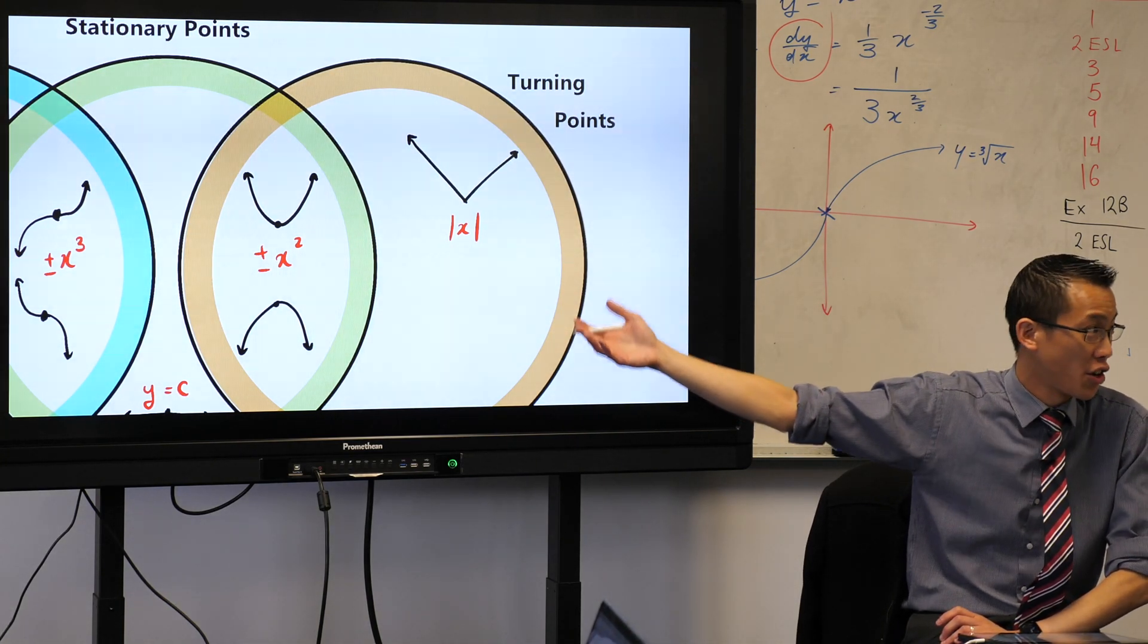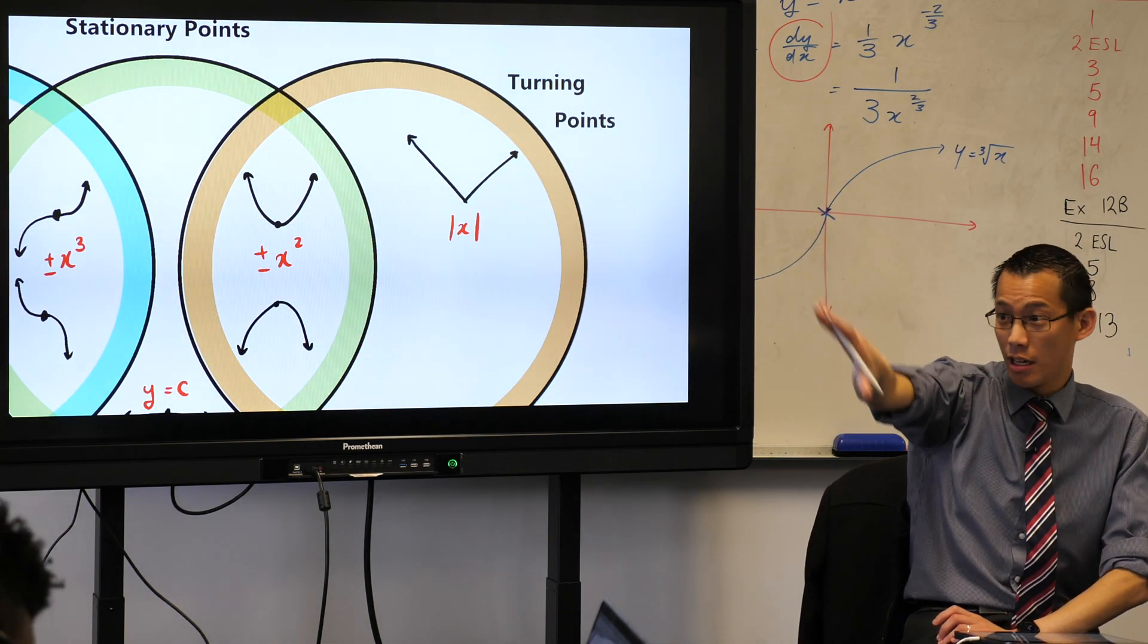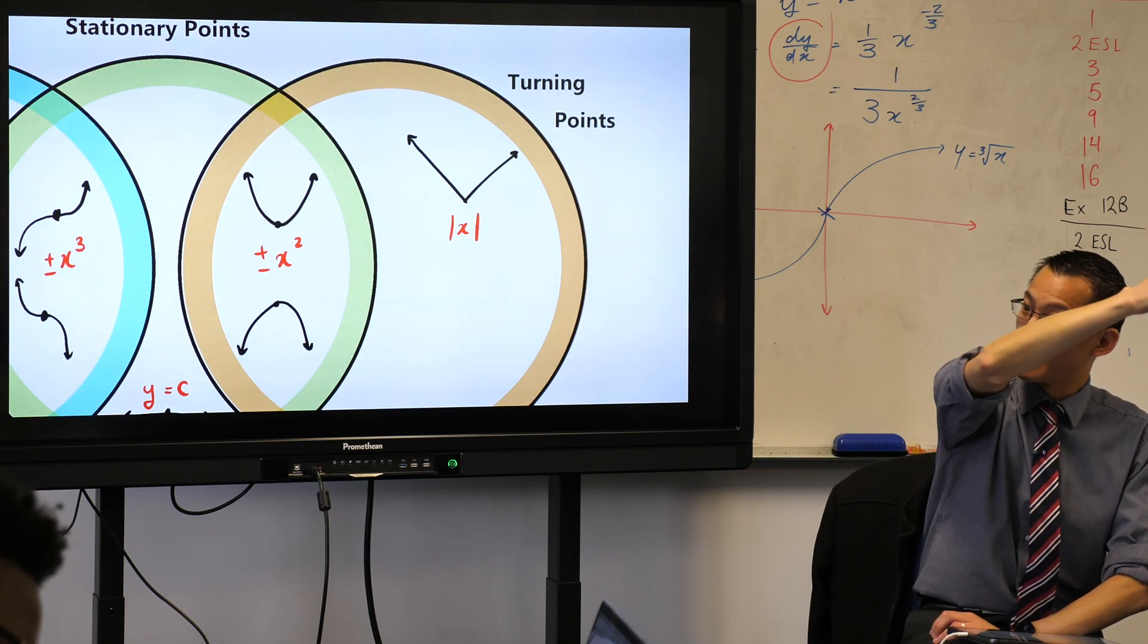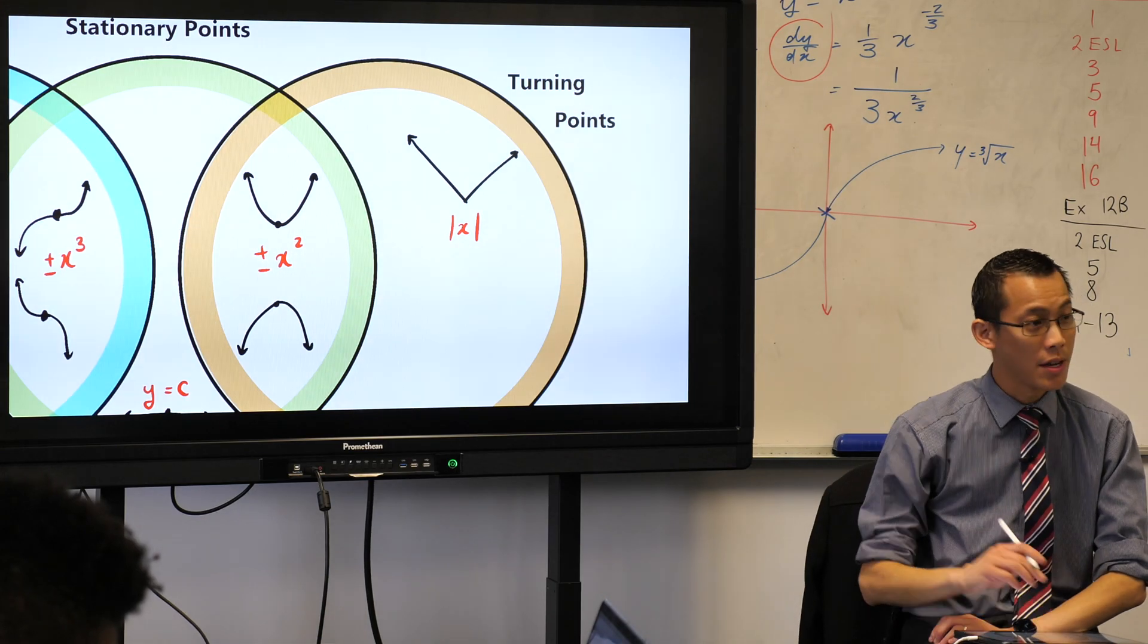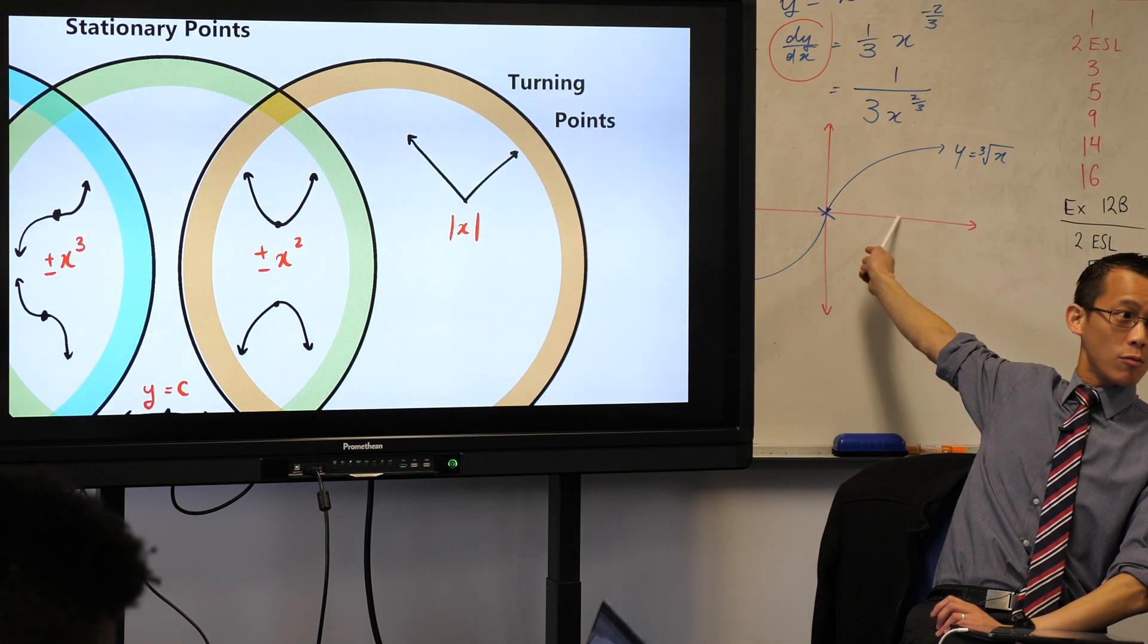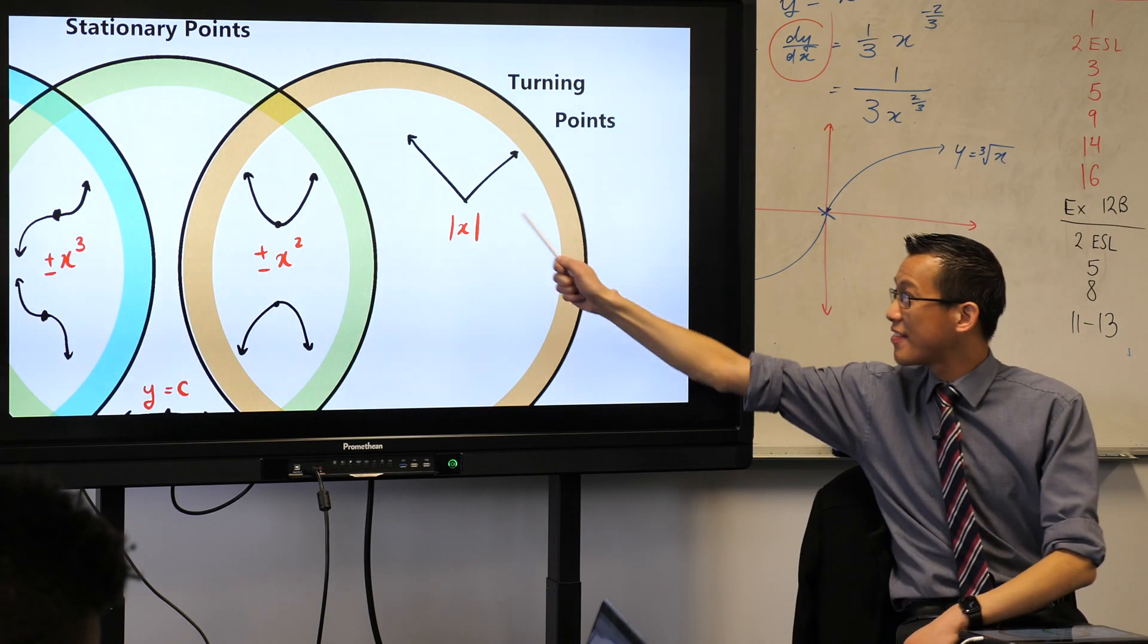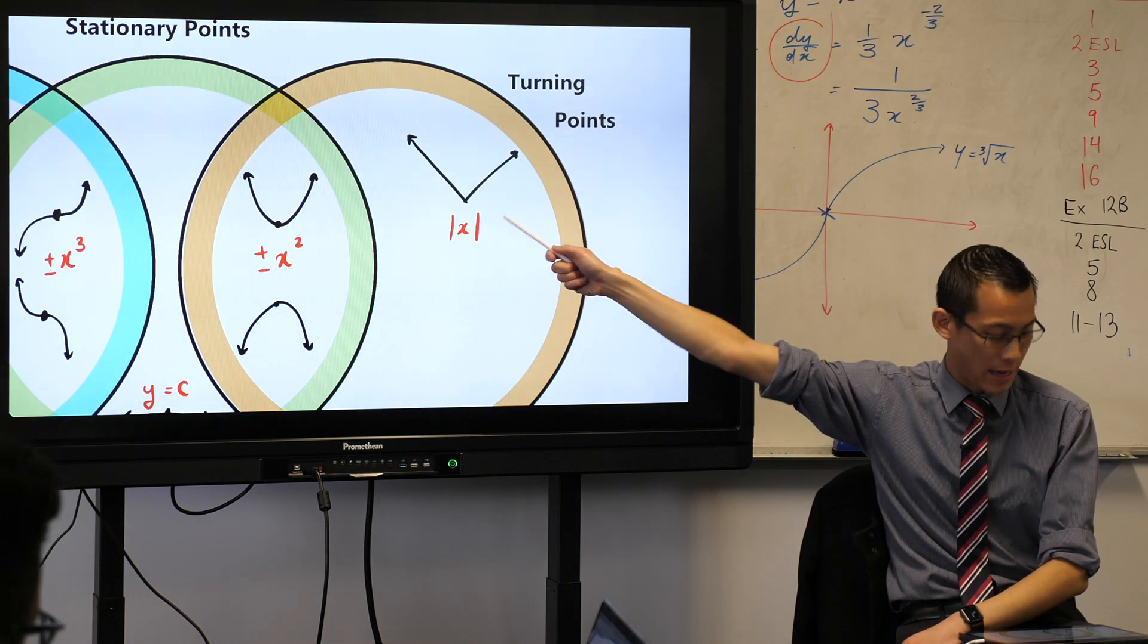And the answer is totally turns. It's decreasing, and then it's increasing. The difference is, though, we don't call it a stationary point because it's sort of in this category. You can't actually find a derivative at that spot where it turns around.